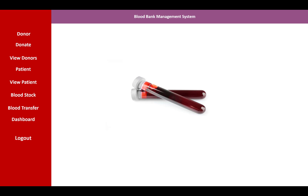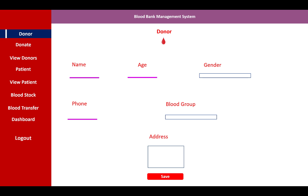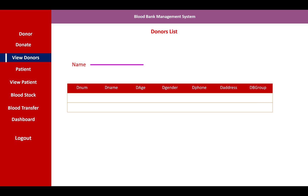The left menu contains: Add Donor, View Donor, Add Patient, View Patient, Blood Stock, Blood Transfer, Dashboard, and more. The donor information section displays the donor's name, age, gender, phone number, blood group, and address.